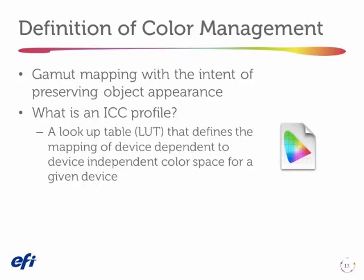Now we're ready to understand color management. Color management is the idea of mapping the colors from one device dependent space to another device dependent space through device independent space where we know what the colors look like. Or we can say it's gamut mapping with the intent of preserving the appearance of objects or colors. We do all this with an ICC profile — simply an index or lookup table that defines the mapping of one device dependent space to device independent space.